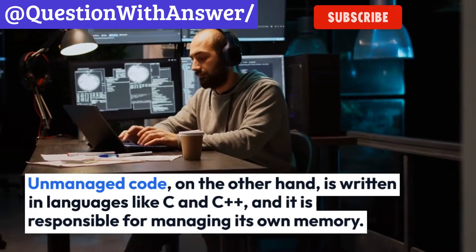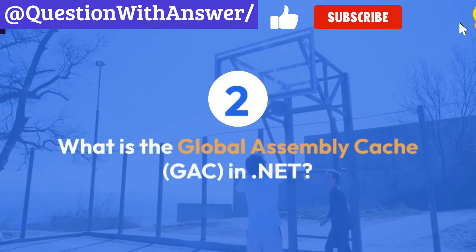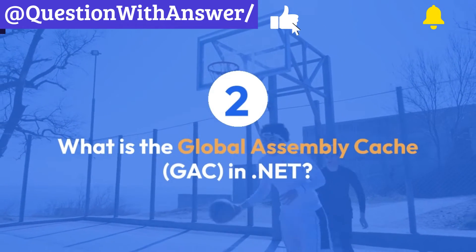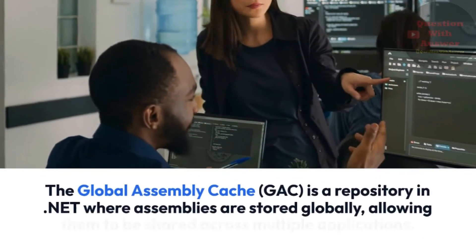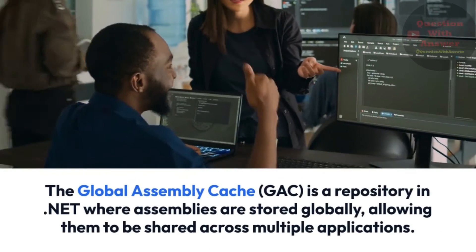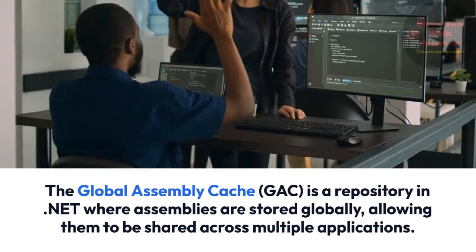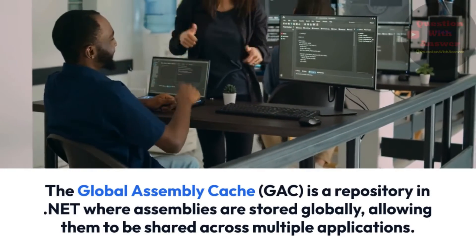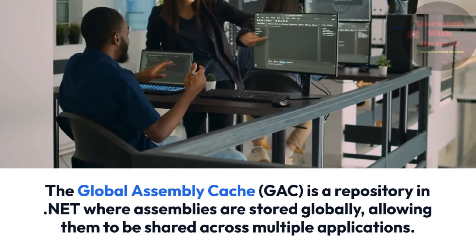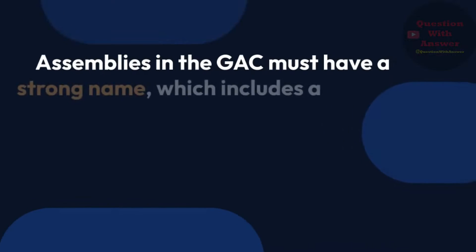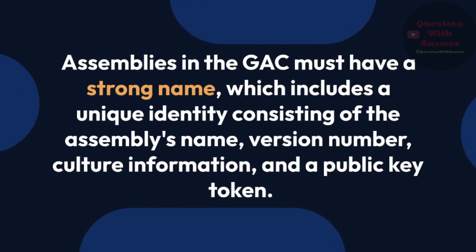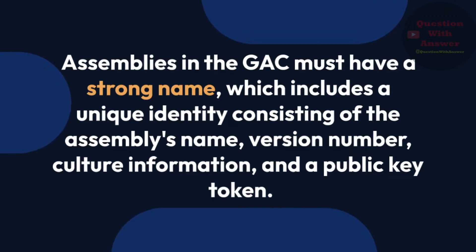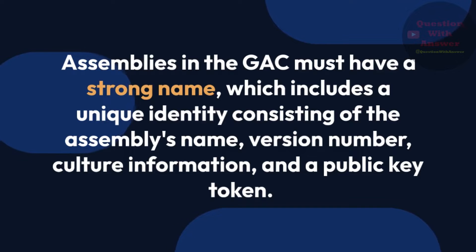Question 2: What is the Global Assembly Cache, or GAC, in .NET? Answer: The Global Assembly Cache, or GAC, is a repository in .NET where assemblies are stored globally, allowing them to be shared across multiple applications. Assemblies in the GAC must have a strong name, which includes a unique identity consisting of the assembly's name, version number, culture information, and a public key token.